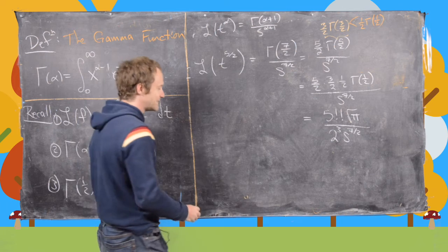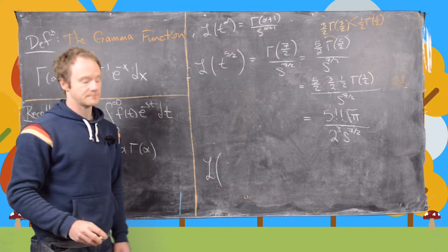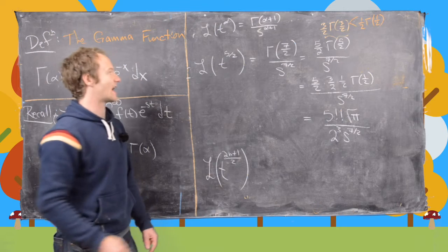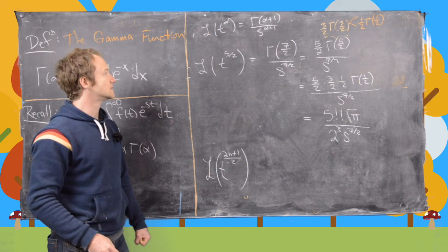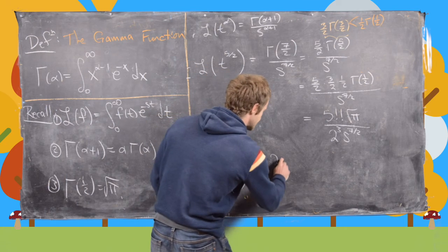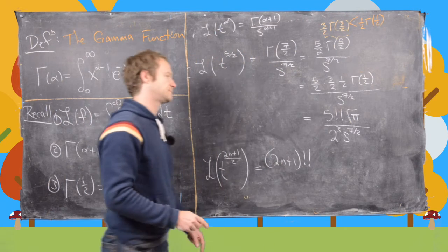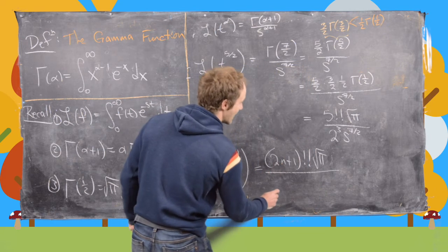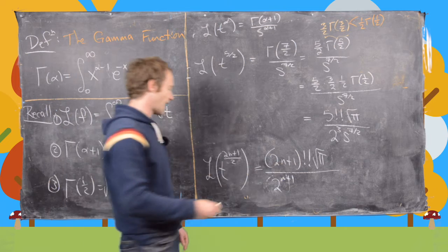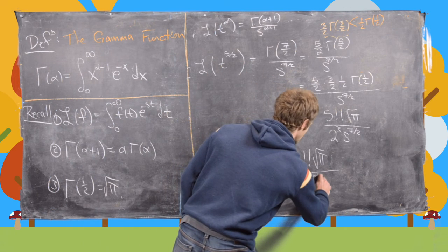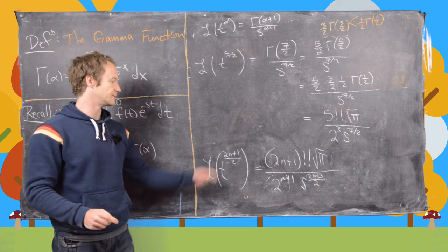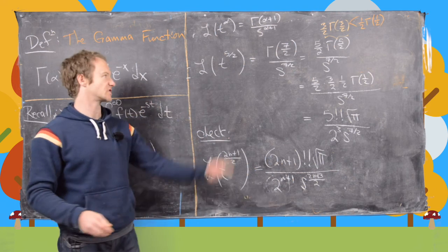We use the fact that gamma of 1 half equals the square root of pi, which was proved in a previous video. So this becomes 5 times 3 times 1 — that's the double factorial 5!! — times the square root of pi, all over 2 cubed times s to the 7 halves. More generally, we can write a formula for the Laplace transform of t to the power (2n+1)/2: it equals (2n+1) double factorial times the square root of pi, all over 2 to the n plus 1 times s to the (2n+3)/2. For example, here n equals 2 since 5 halves corresponds to (2·2+1)/2. This is a good formula to verify on your own and prove by induction.